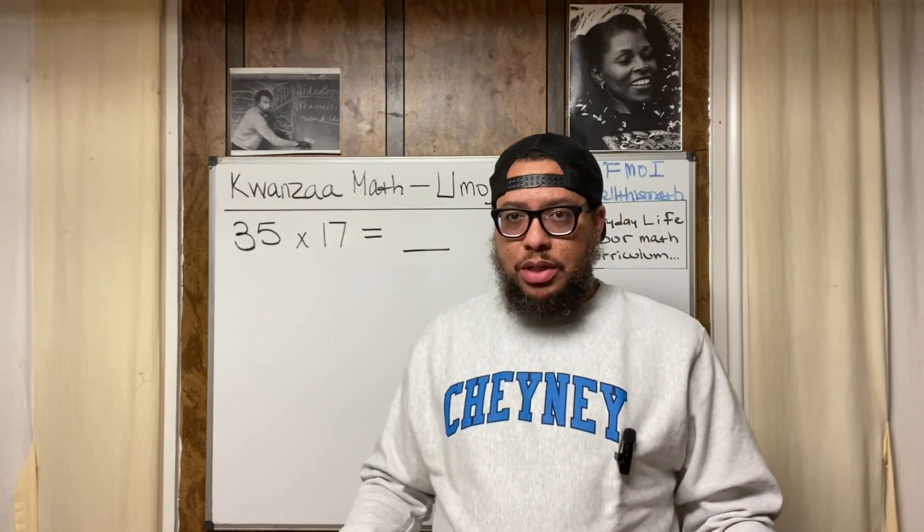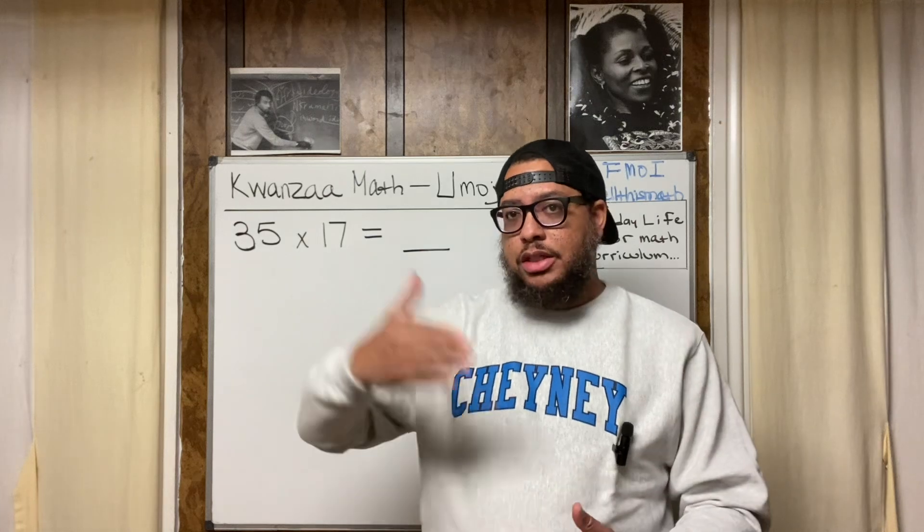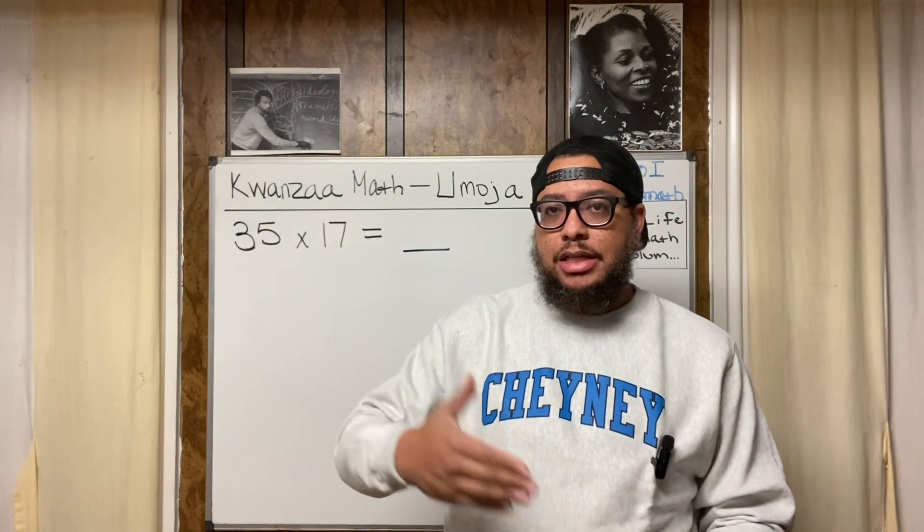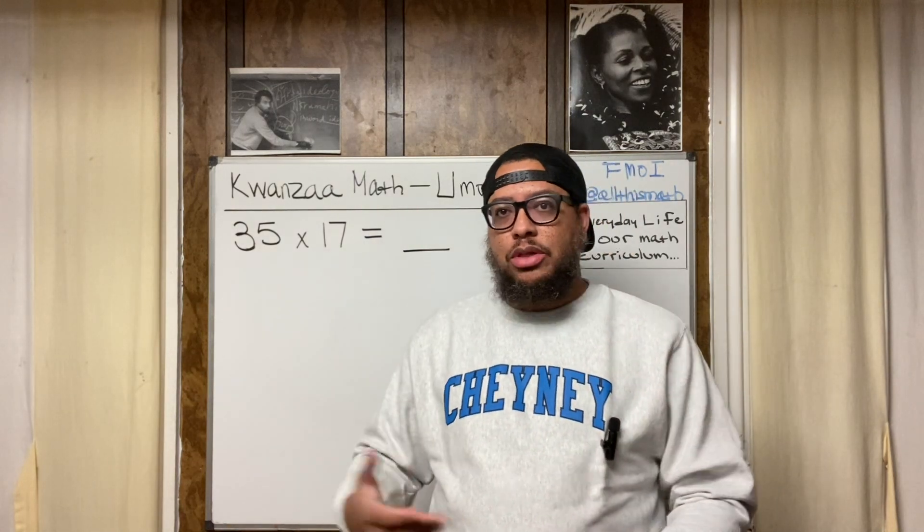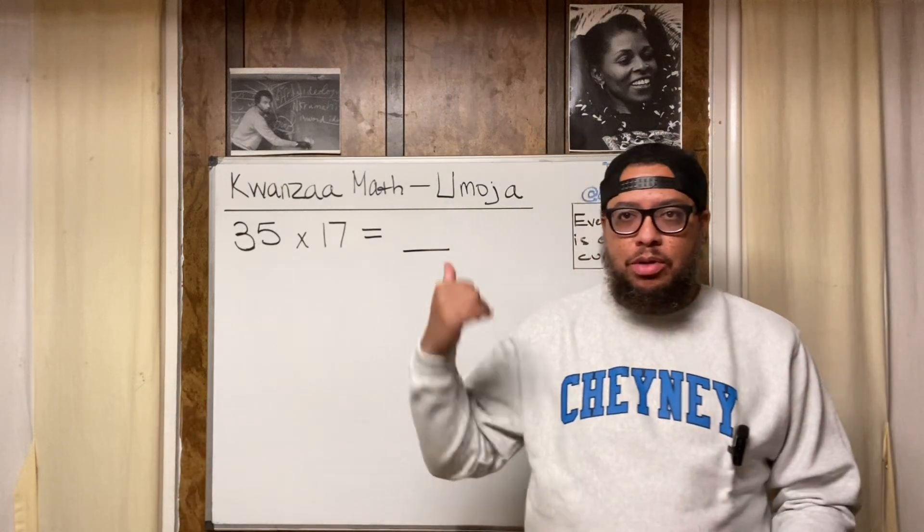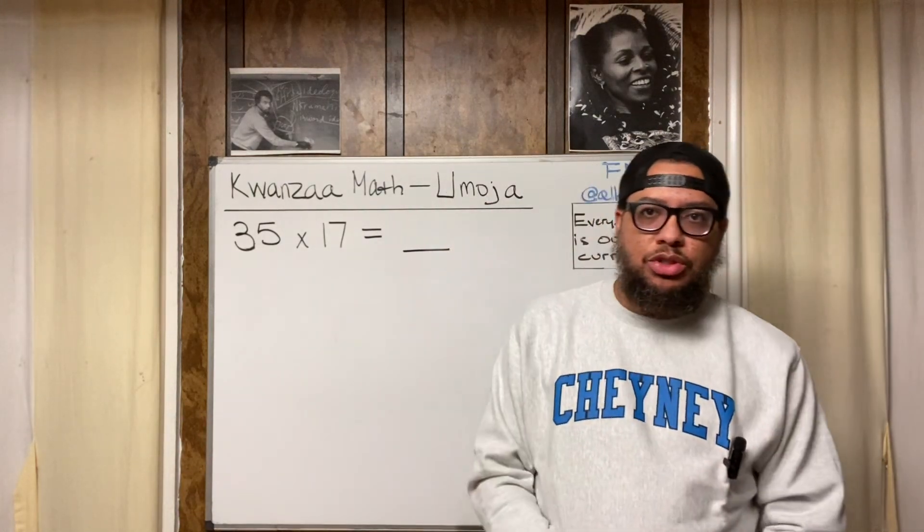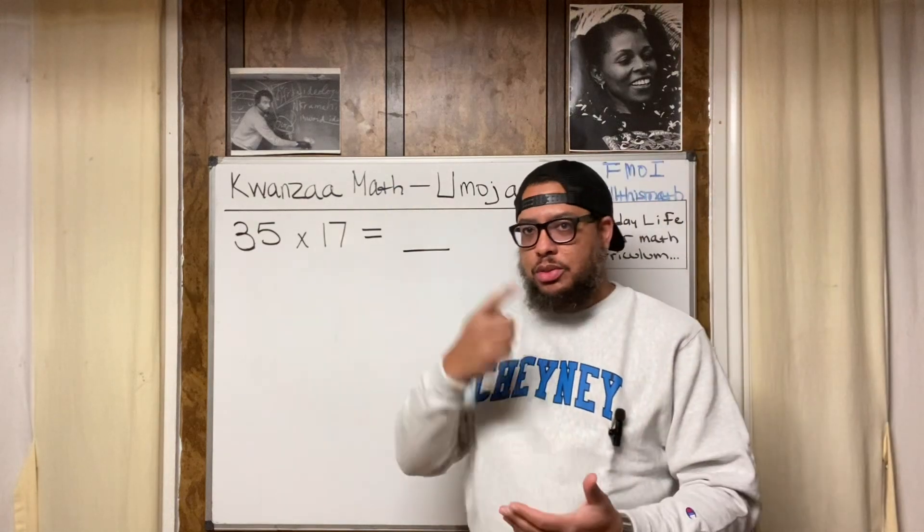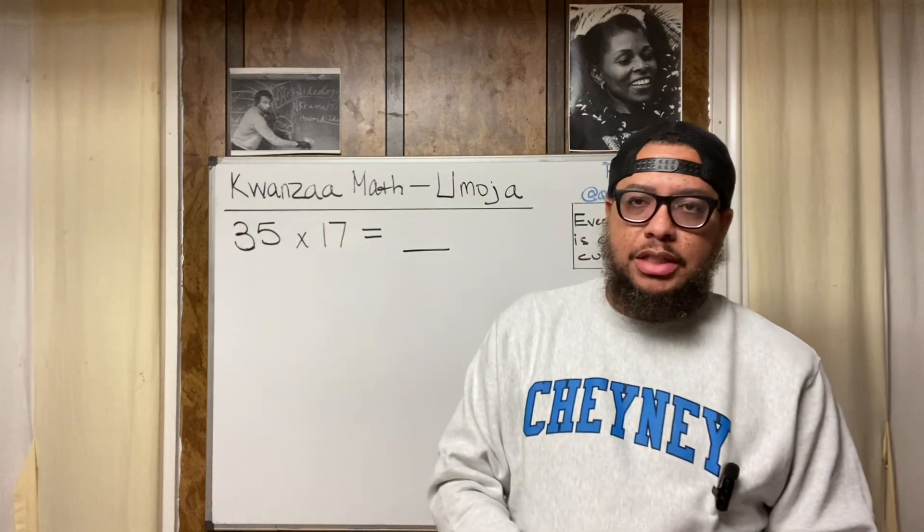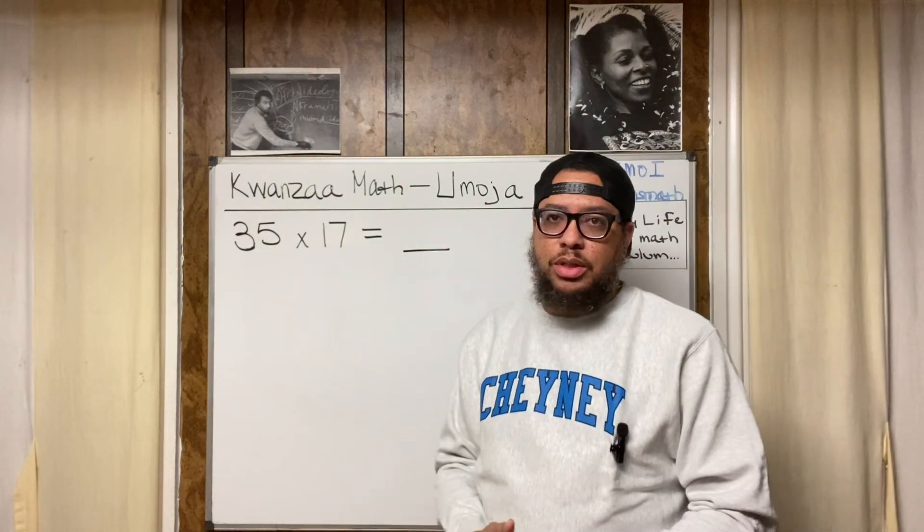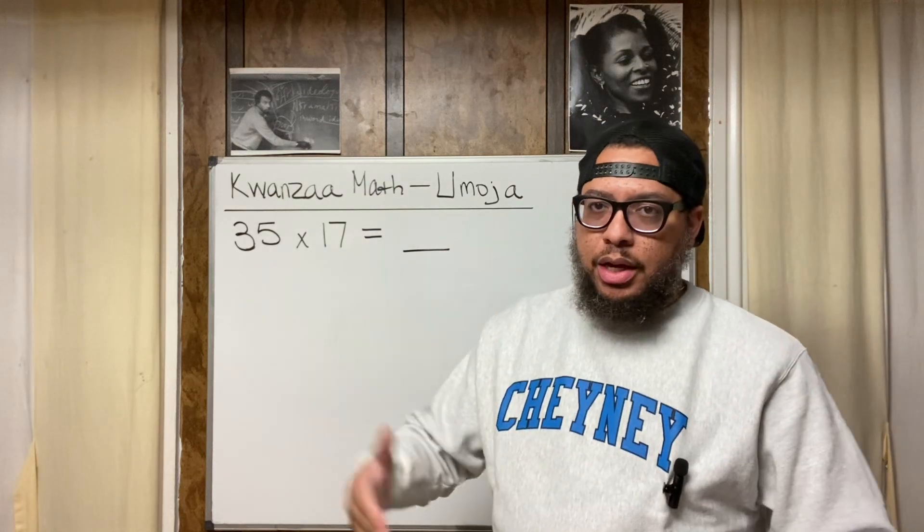Also, one of the principals of the Institute for Colored Youth before Cheney is named Cheney University was Fannie Jackson Coppin. Fannie Jackson Coppin is who Coppin State University out in Baltimore is named after. So do your research on Cheney University and those two individuals, Octavius Cato and Fannie Jackson Coppin and all the other people that taught there, the graduates, and whatnot.